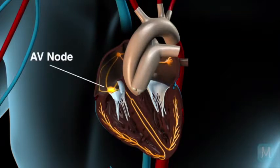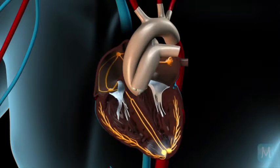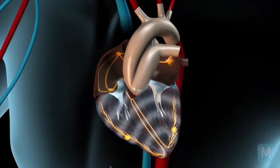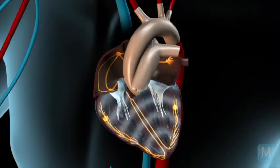which is called the AV node. The impulses collect there and then travel down the conduction system that then goes to both the right and left ventricle. And the electrical impulses then spread to both ventricles from there.